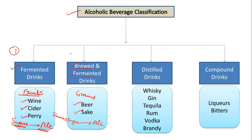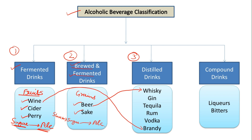The third category is distilled drinks. Distilled drinks are essentially a purification of one of the previous drinks. For example, if you do distillation of beer you will get whiskey. If you want to know what distillation is, you can watch my other videos on pot still, patent still distillation, and alcohol distillation. Similarly, if you distill wine, what you will get is brandy.